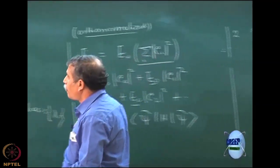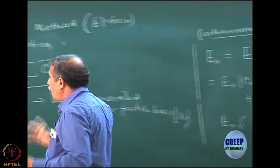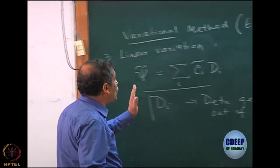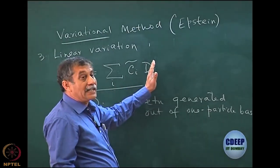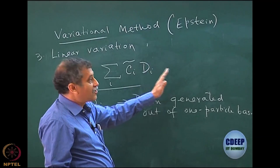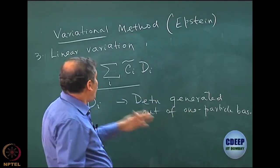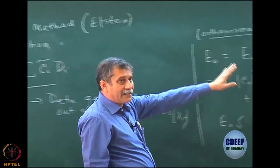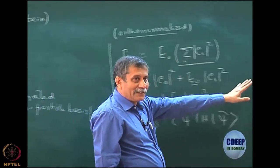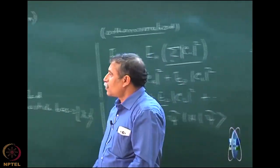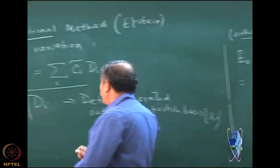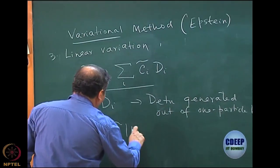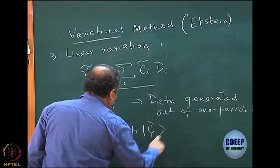What is interesting, of course, is not that. What is interesting is what happens when I do not vary over the entire Hilbert space. Clearly Theorem 2 would still hold — this quantity would certainly be greater than or equal to E_0.